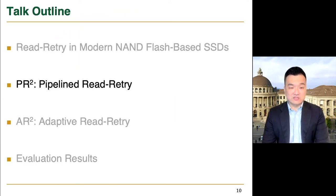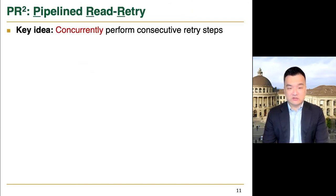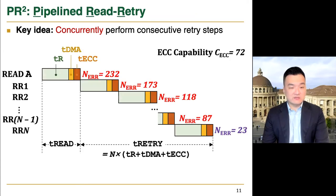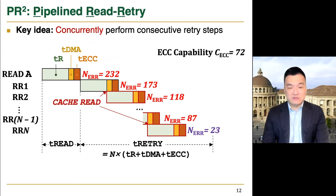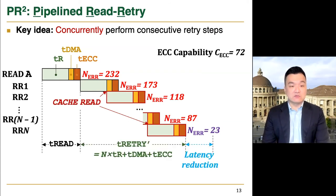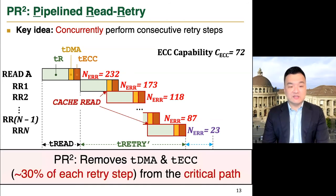Next, I will present our first technique. Our first key idea is to concurrently perform consecutive retry steps. Using the cache read command, PRScare speculatively starts the next retry step as soon as the page sensing of the current retry step is finished. This idea is quite simple, but can significantly reduce the read retry latency by removing data transfer and ECC decoding from the critical path, which contributes almost 30% of the latency of each retry step.